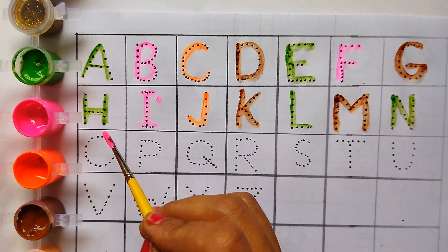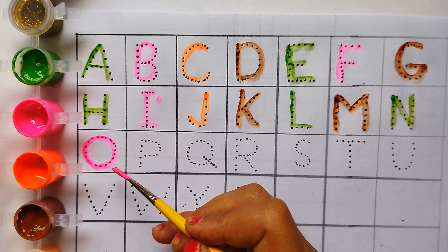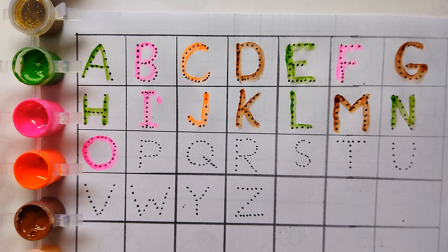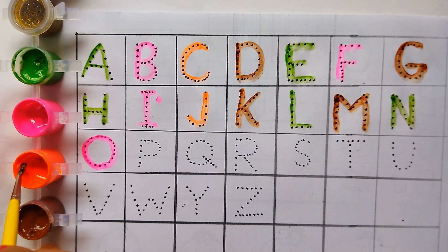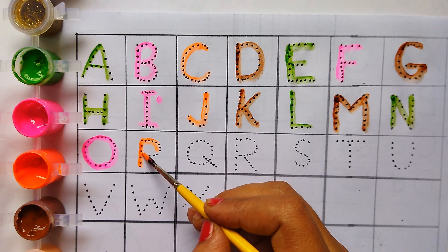Pink colour O. O for owl. Orange colour P. P for parrot.